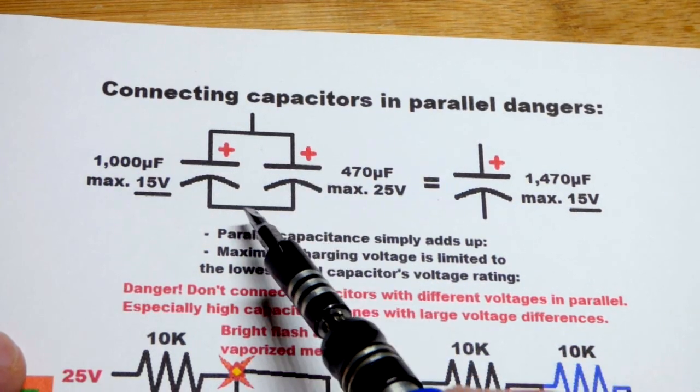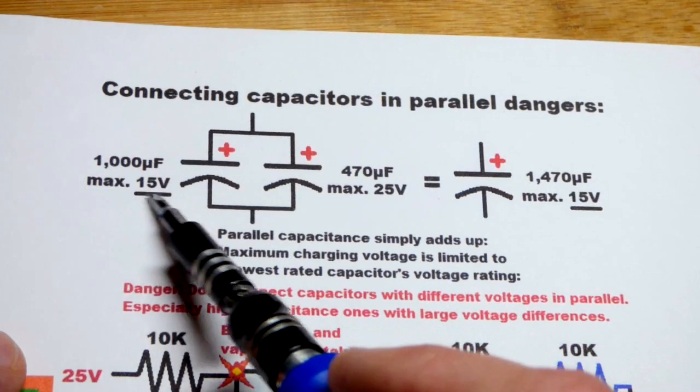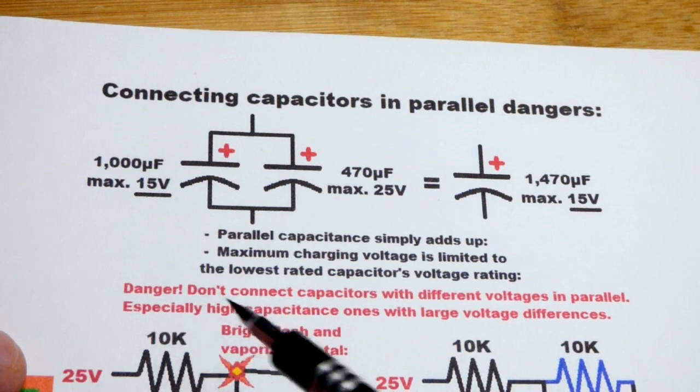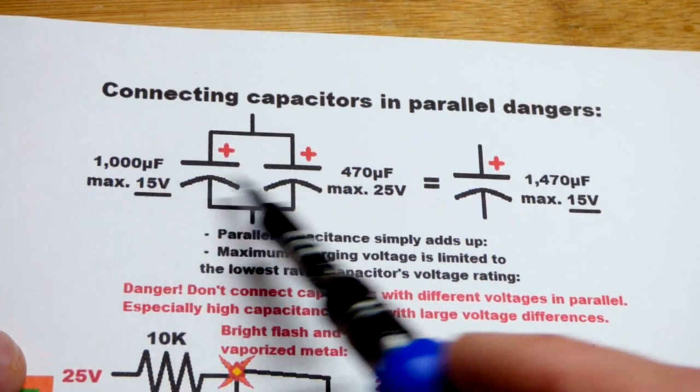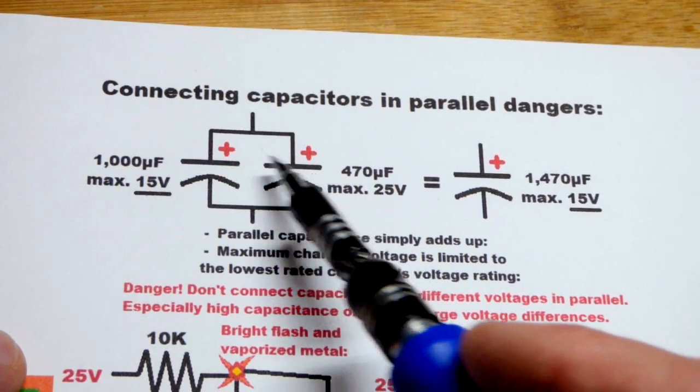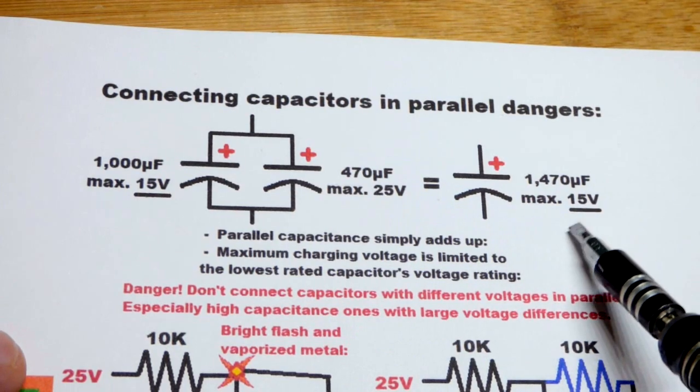If you raise this capacitor to 15 volts, that capacitor will also be 15 volts. And if that capacitor's maximum rating is 15 volts, that means you can't apply any more voltage to these two capacitors, even though that one could hold more. If you raise the voltage there, you're also going to raise the voltage there and exceed the voltage of that one.